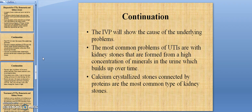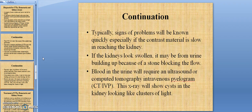Calcium-crystallized stones connected by proteins are the most common types of kidney stones. Typically, signs of problems will be known quickly, especially if the contrast material is slow in reaching the kidneys. If the kidneys look swollen, it may be from urine building up because of a stone blocking the flow. Blood in the urine will require an ultrasound or computed tomography intravenous pyelogram. This X-ray will show cysts in the kidneys looking like clusters of light.